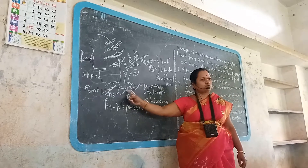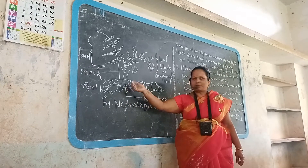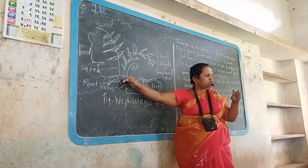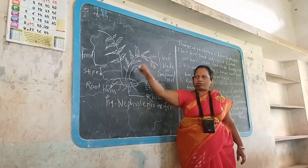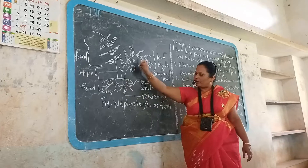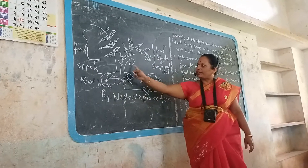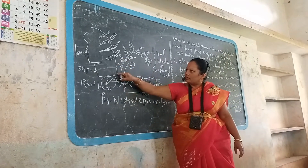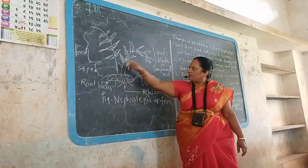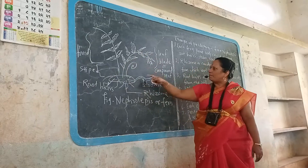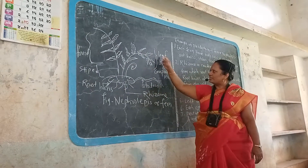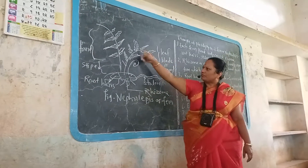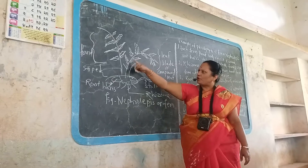The function of root hairs is to absorb water and minerals from the soil. The function of the rhizome is to give support and anchorage to the plant body. On the upper side of the rhizome, compound leaves are arranged spirally.